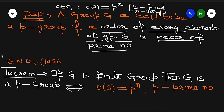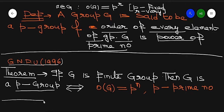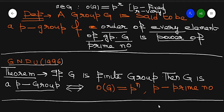The next theorem states: if G is a P-group, then the order of G is equal to P raised to power n, where P is a prime number and n is some positive integer. This is the statement of our theorem.